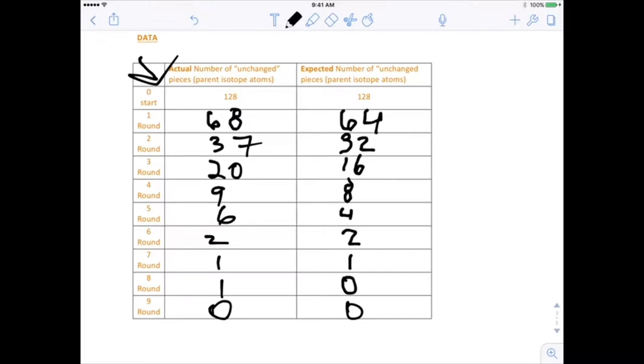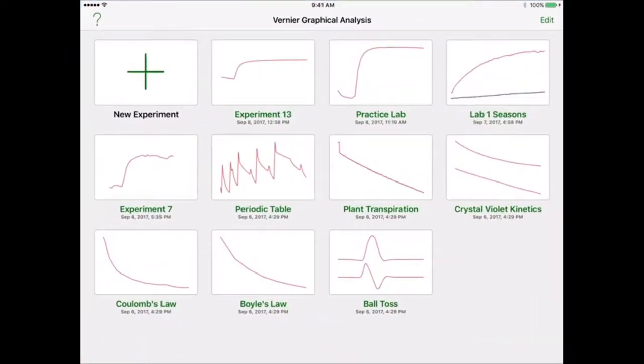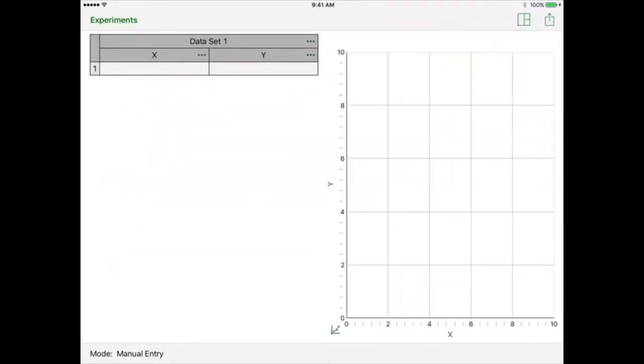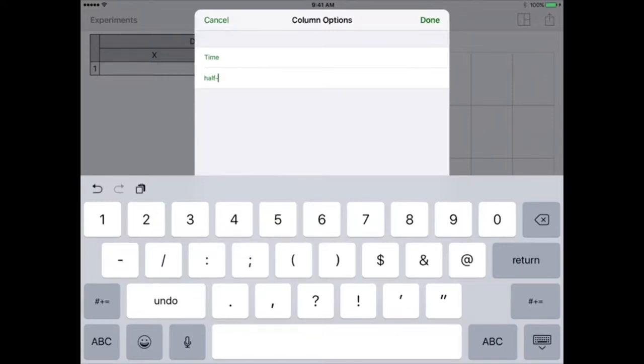We're going to take this data and put it into graphical analysis. If I go into graphical analysis, new experiment, manual entry, you're able to manually input data. If you click the dots right next to the two parameters, we'll do column option. This first column we're going to call time, and the unit is going to be half-life, because each round of trials we did represented one half-life.